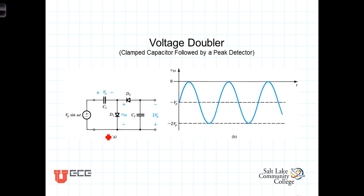This first part of the circuit is the clamped capacitor or voltage, or the DC restorer, clamped capacitor. And it's followed by the peak detector.